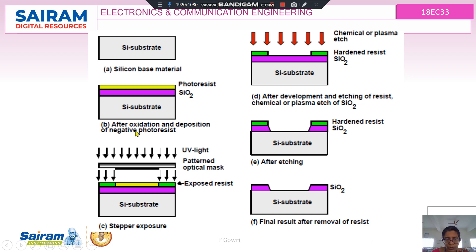After placing the patterned optical mask, ultraviolet light is passed through it. The regions exposed to UV light undergo polymerization and hardening of the photoresist material. The layer that is not exposed retains a hardened resistance, while the exposed layer remains soft. The exposed soft layer can then be removed by chemical or plasma etching.